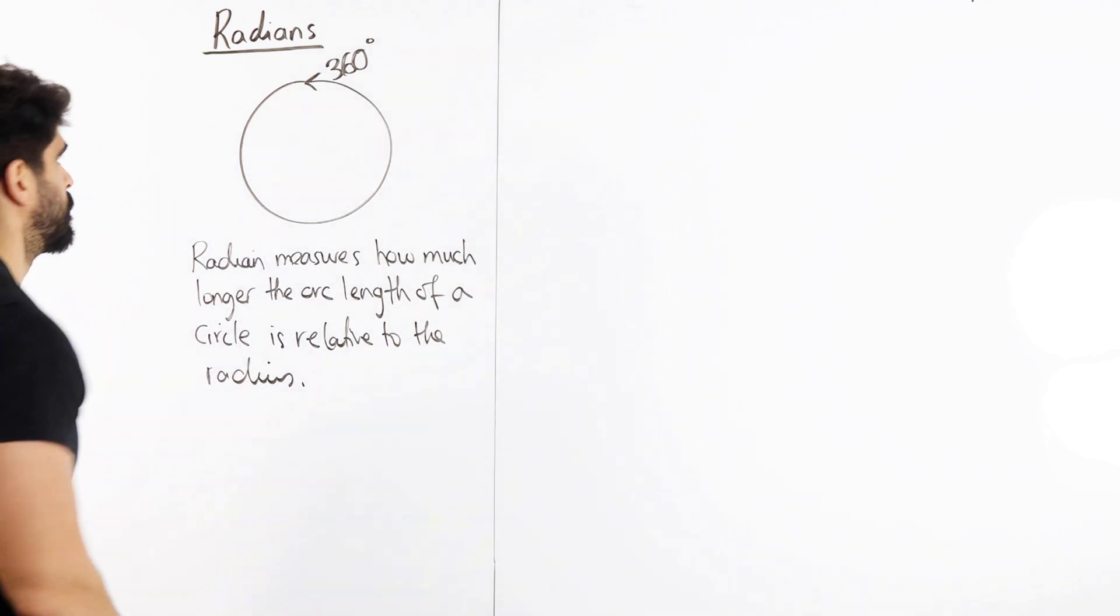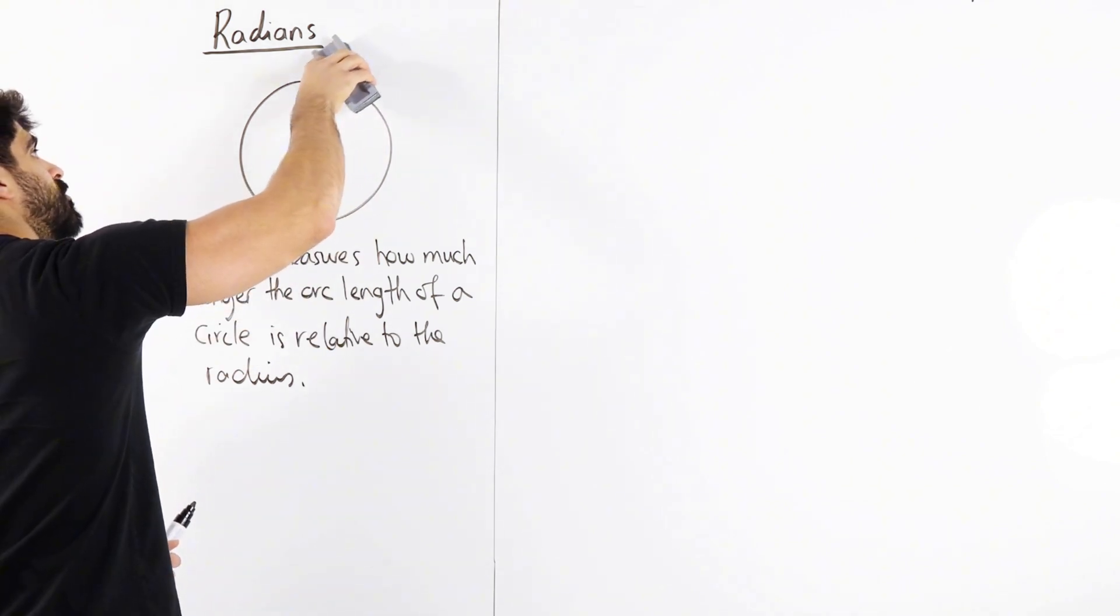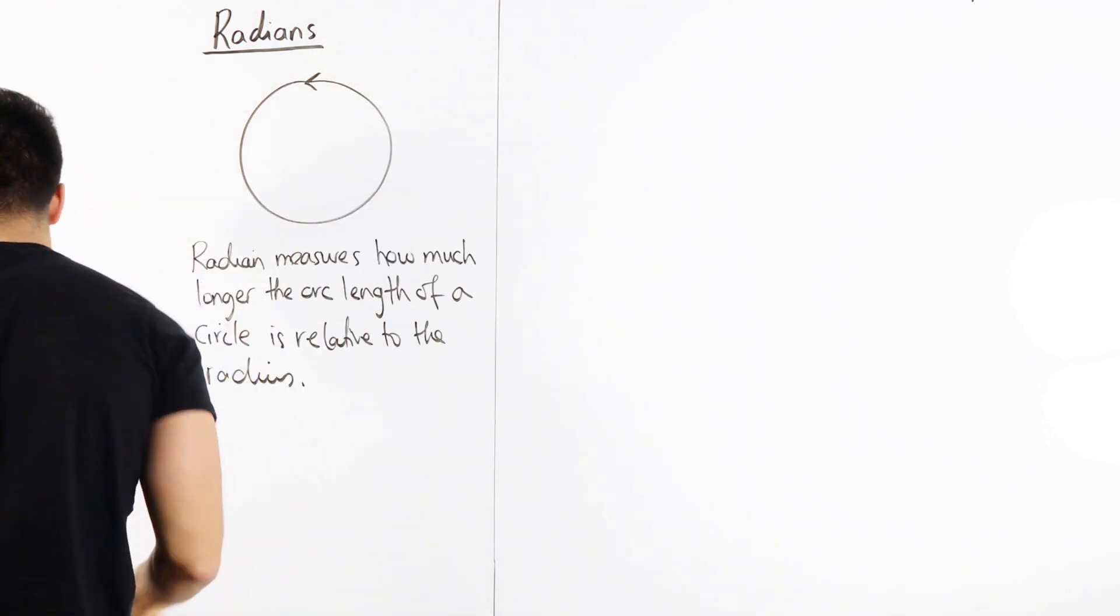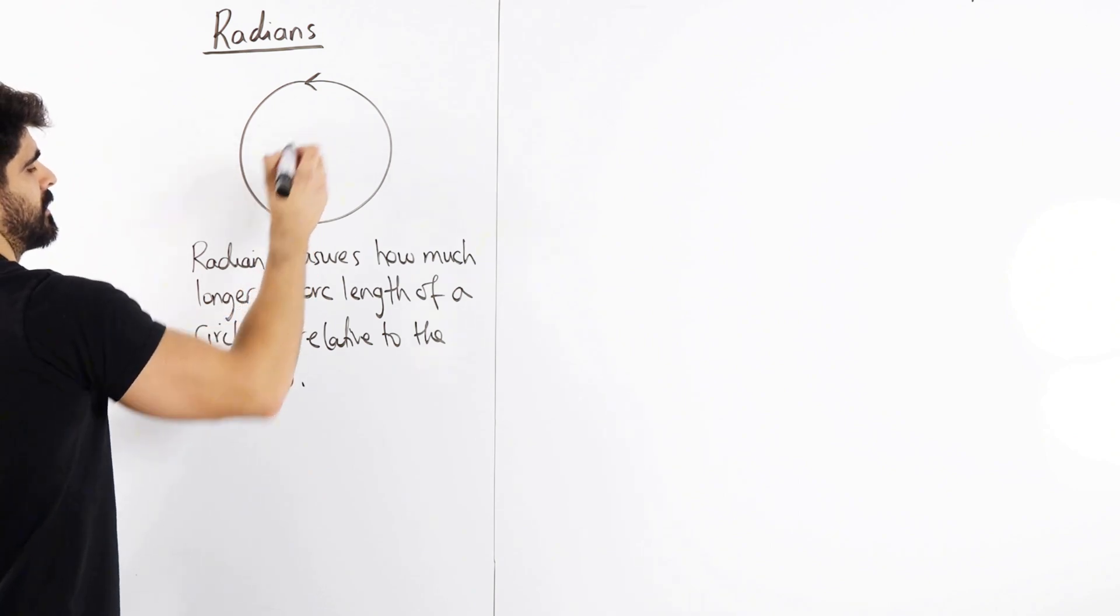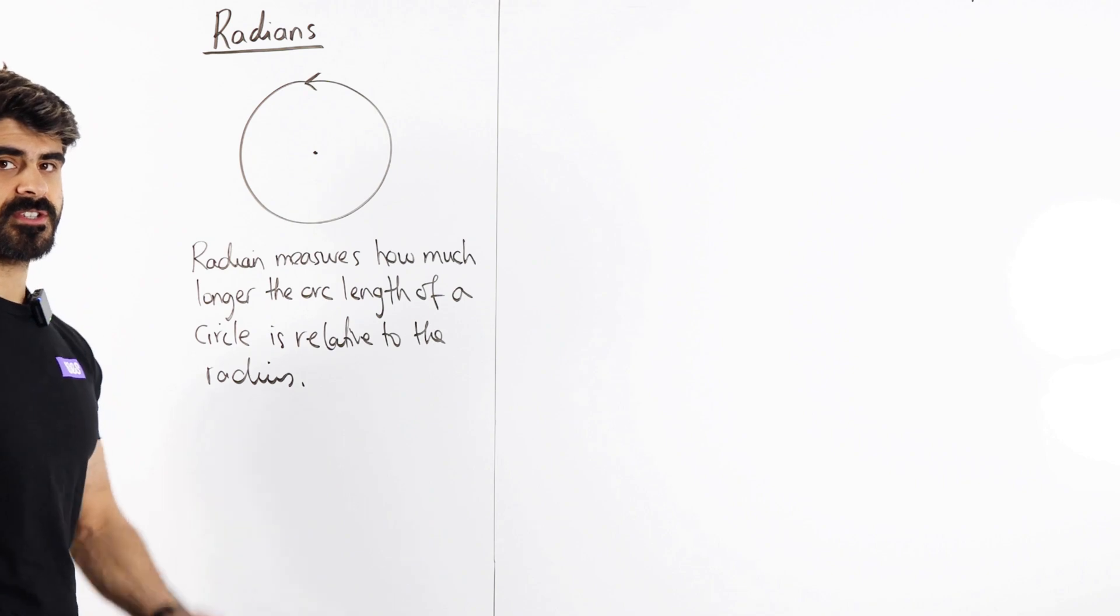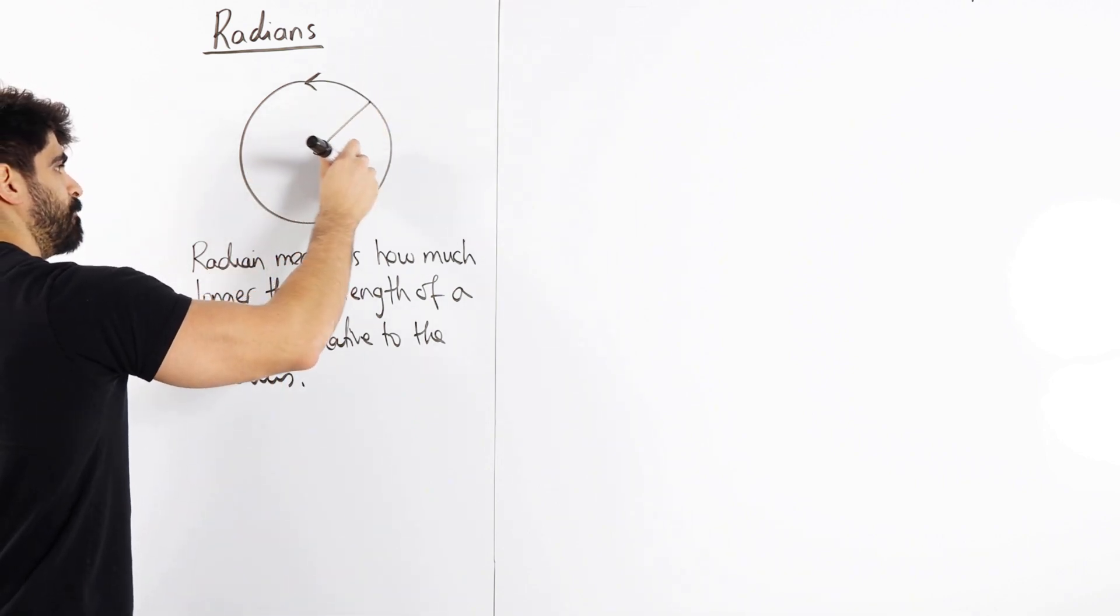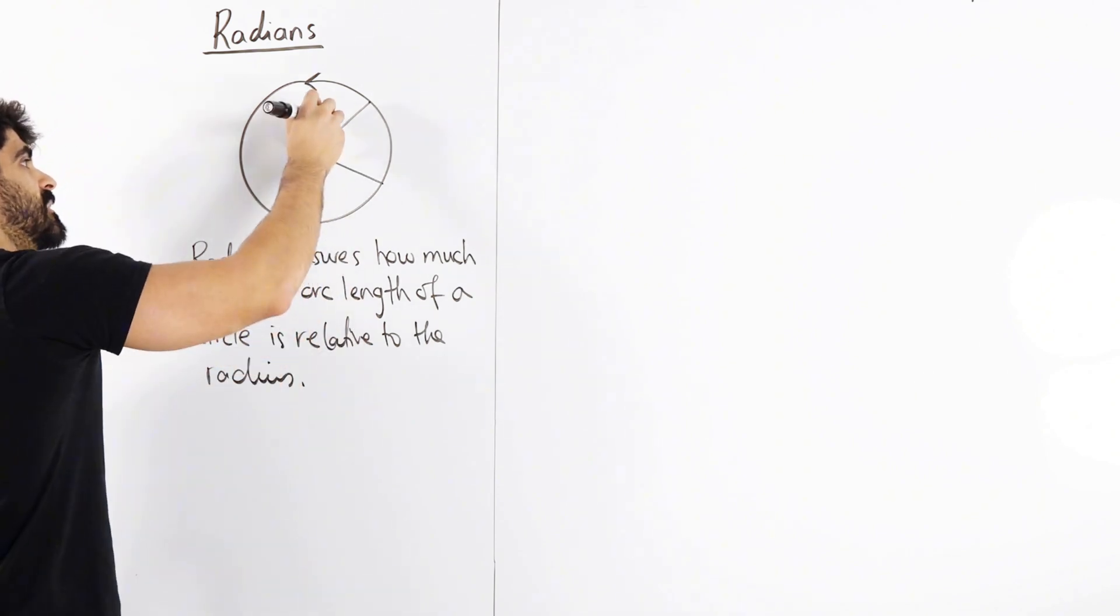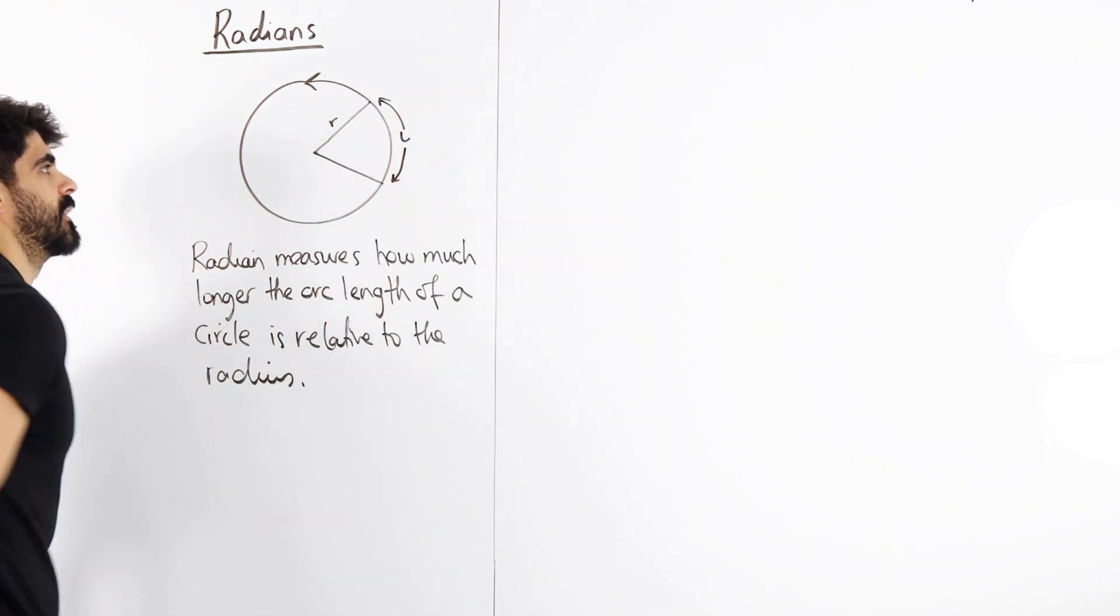Okay? So forget about this 360 degrees for a second. Let's remind ourselves of some definitions of sectors, segments, et cetera. So here's my center. And we're going to look at a sector. A sector is basically a slice of cake in a circle. You have the radius and this is your arc length.